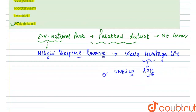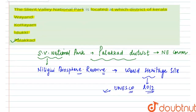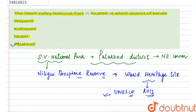So, the answer to this question is Palakkad district. Wayanad, Kottayam, and Idukki are incorrect options. I hope this is clear to you. Thank you.